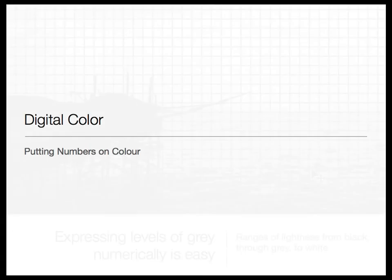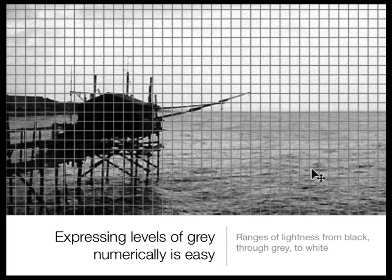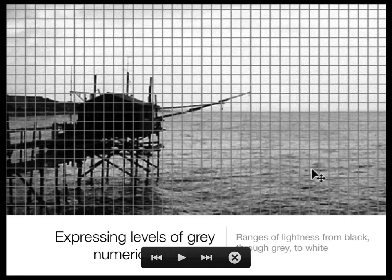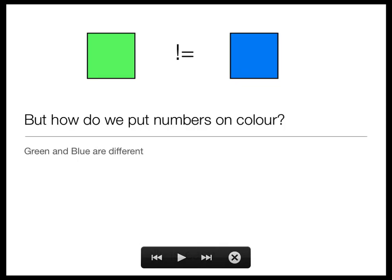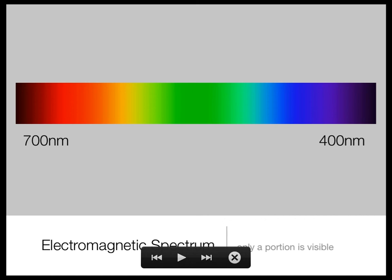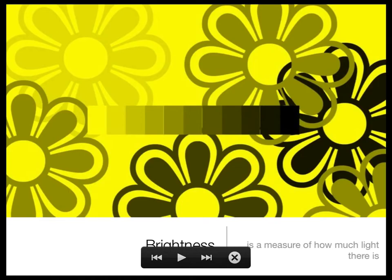Yesterday we began our look at digital color and how we represent color using numbers. Representing a degree of lightness and darkness using a number is easy, with lightness in one and darkness in the other and a range of shades of gray in between. But color is more complex — green is different from blue, different in what way? So we talked about the hue, saturation, and brightness model.